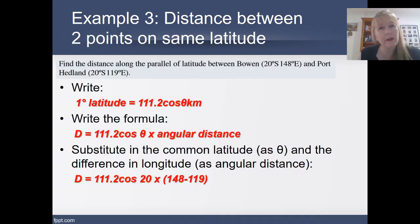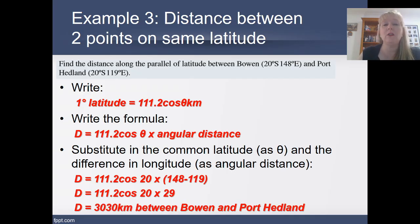Pop this information into your calculator. You're going to have 111.2 cos 20. You can just type it exactly like that. Multiply your answer by 29. And you're going to find that there's 3,030 kilometres between Bowen and Port Hedland.